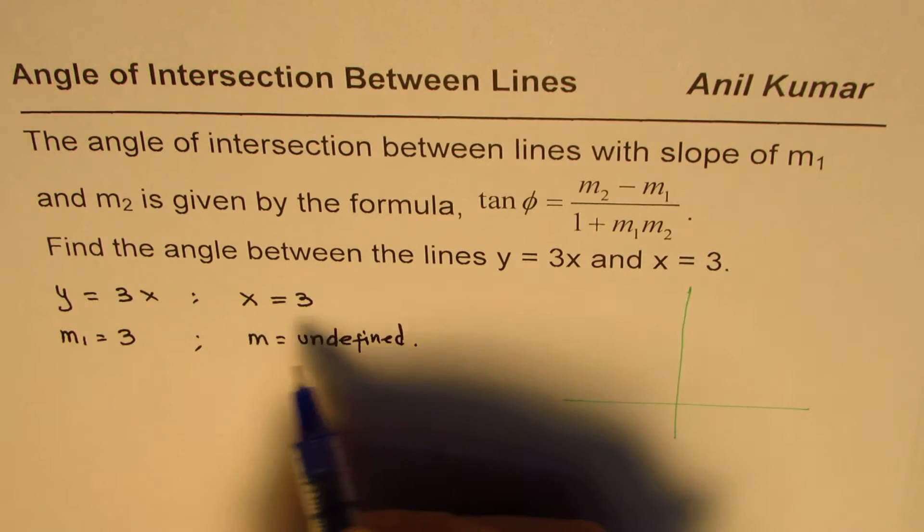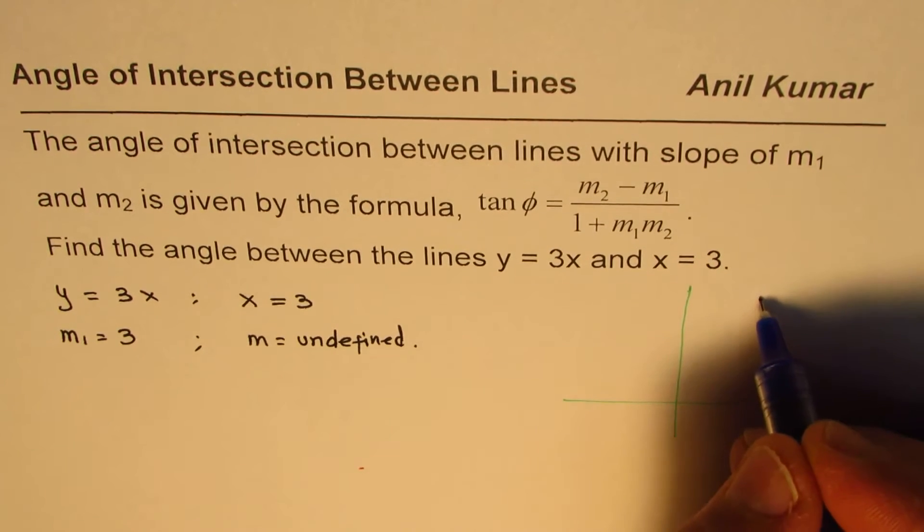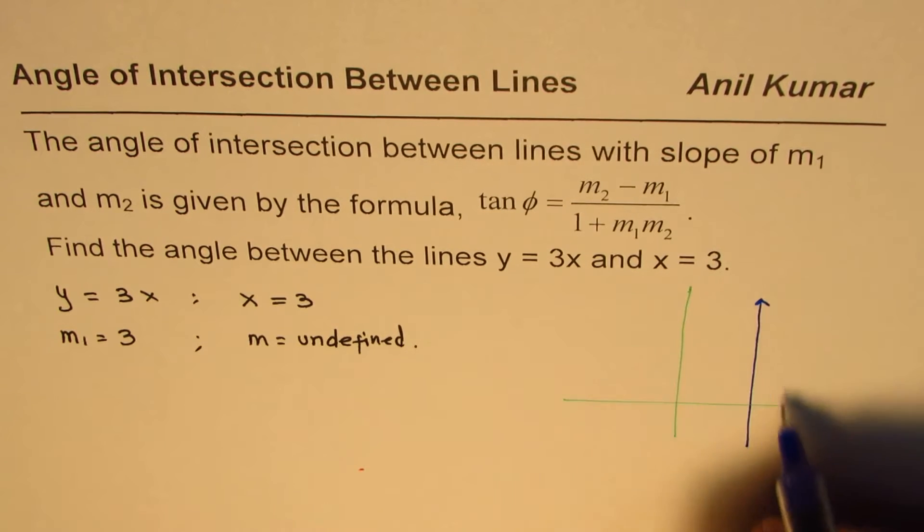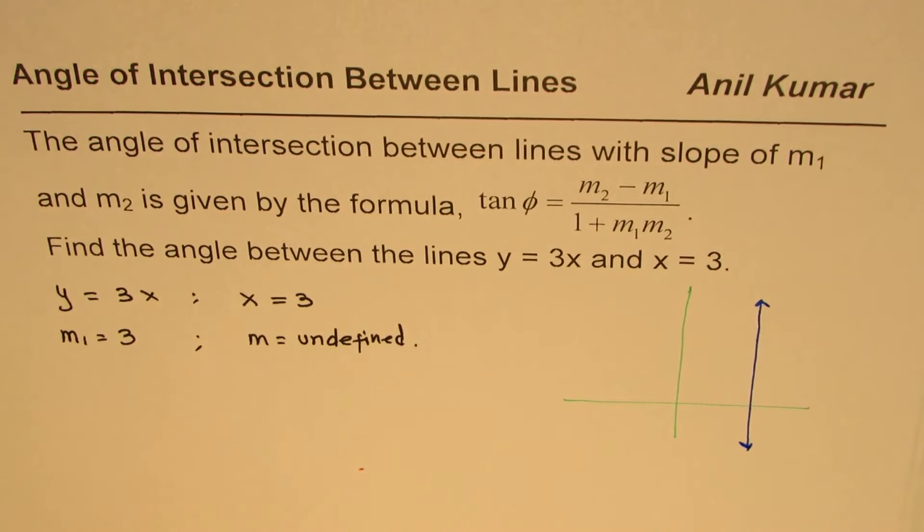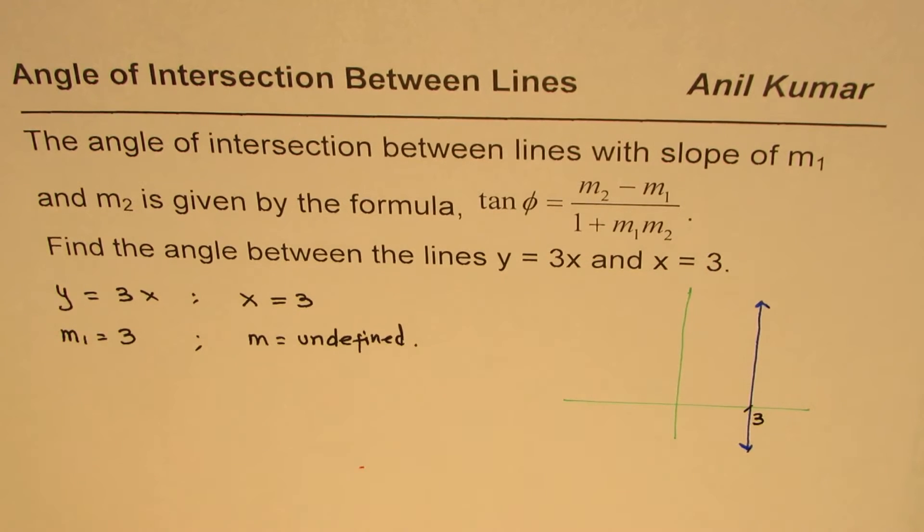And that is, let me first sketch the lines. If I want to sketch x equals 3, which is a vertical line kind of like this, with x intercept of 3. The other line is 3 times x.